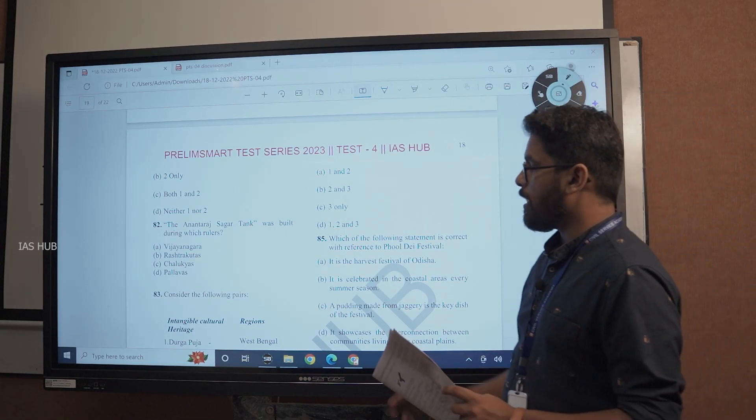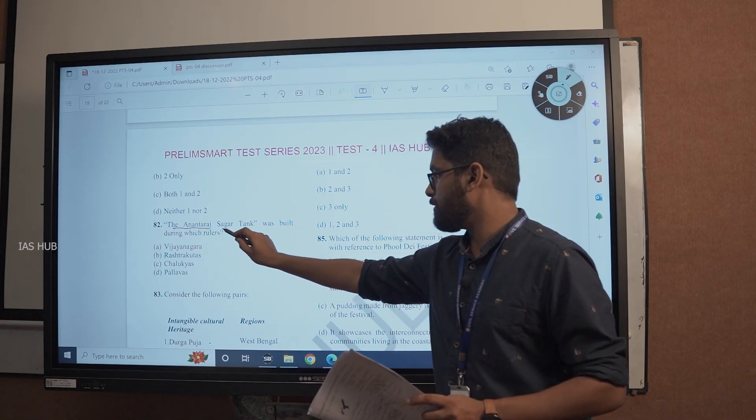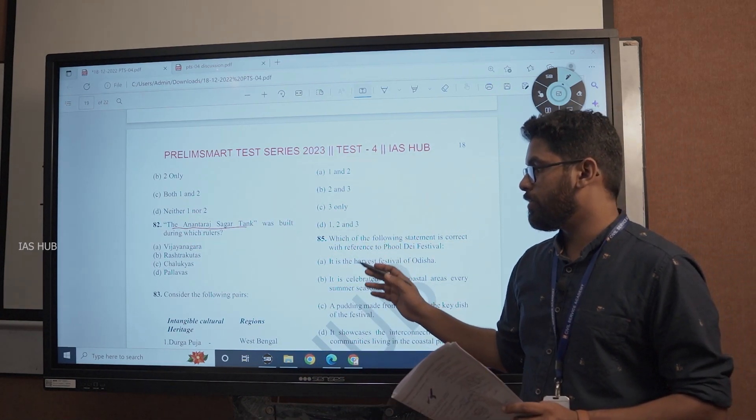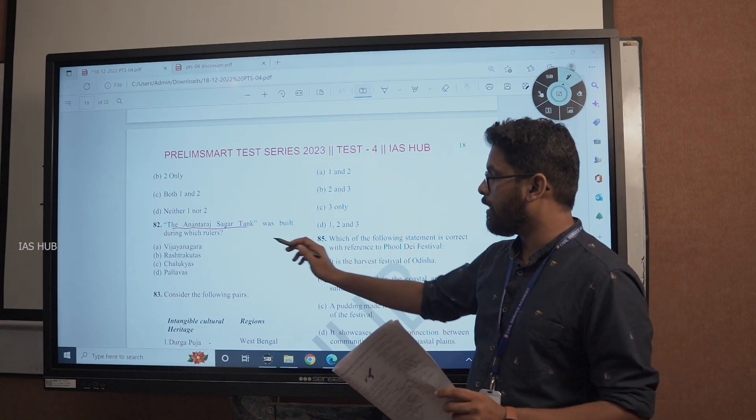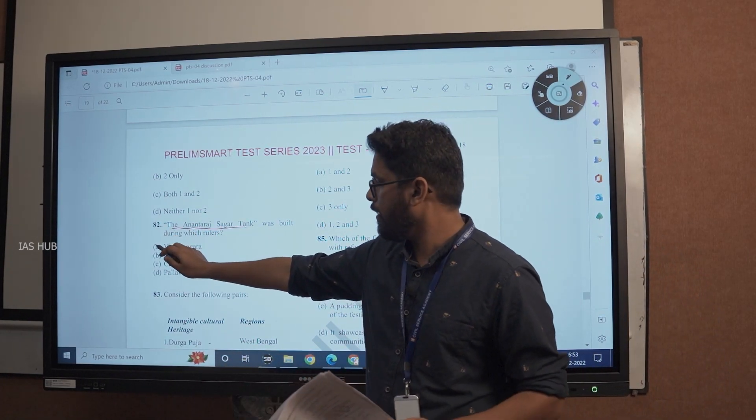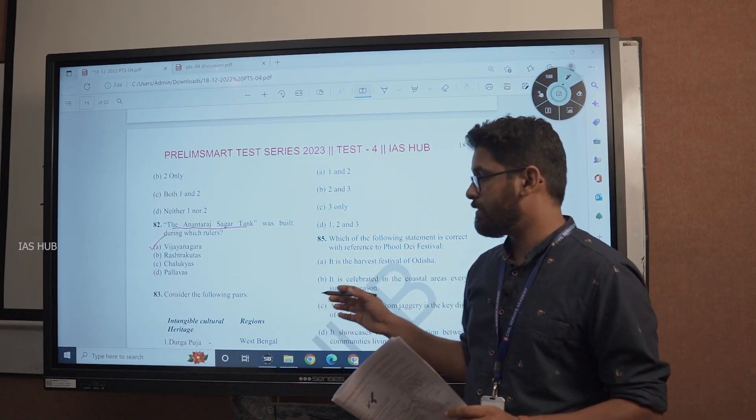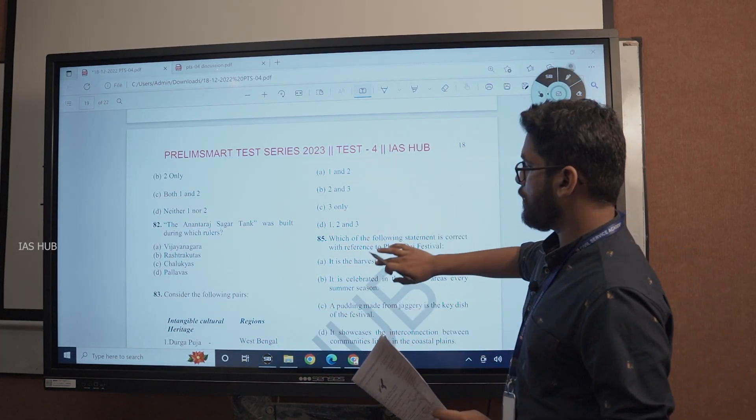The Anantaraja Sagar tank was built during which ruler? Vijayanagara, Rashtrakutas, Chalukyas, or Pallavas. Anantaraja Sagar tank was built by Vijayanagara rulers. Simple, directly taken from 7th NCRT. Not need much explanation.